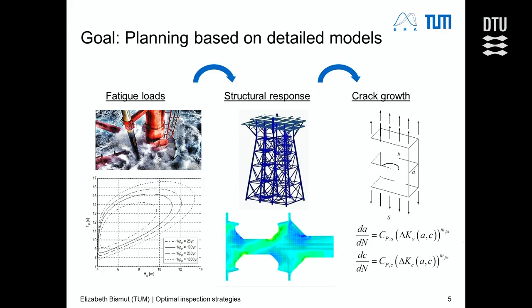We're looking at planning based on detailed models. For instance, we have an offshore structure or a wind turbine, which are subject to various loads during their lifetime. These produce structural responses and, in consequence, crack growth due to fatigue, corrosion, etc. The evolution of crack growth has been described in literature with formulas — in this example we use the Paris law for propagation of fatigue crack growth.